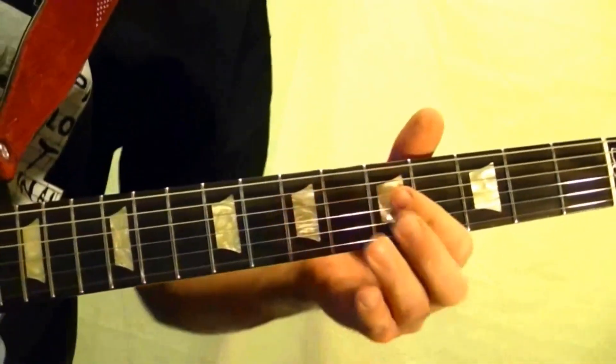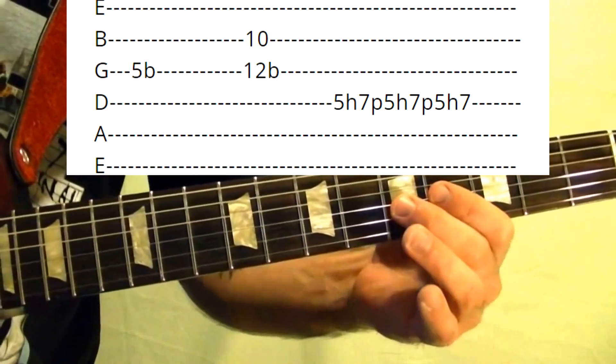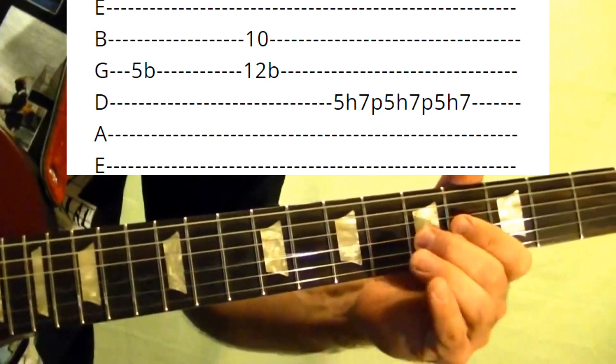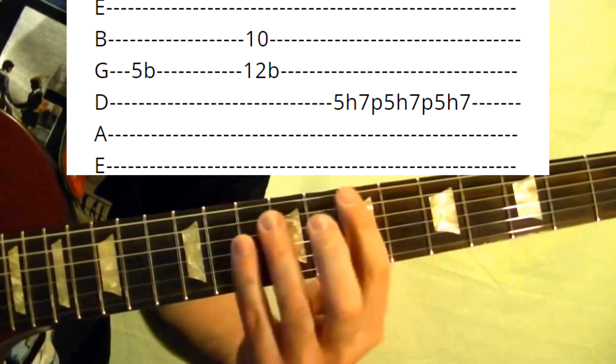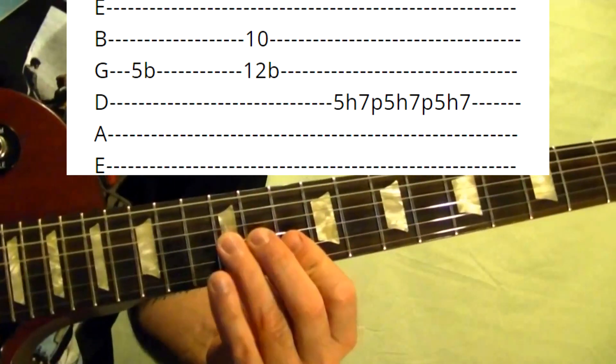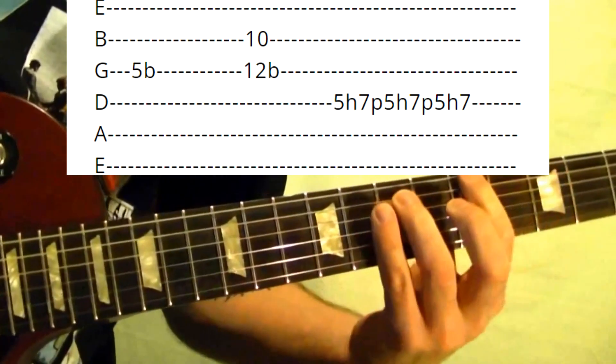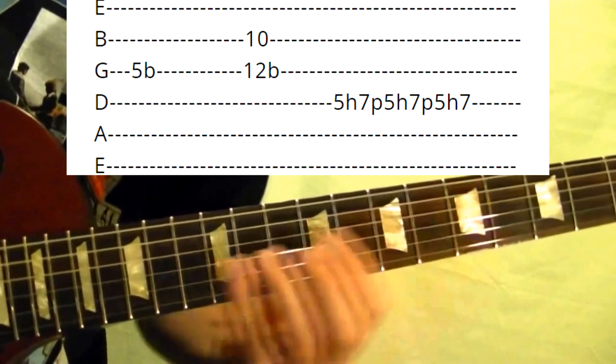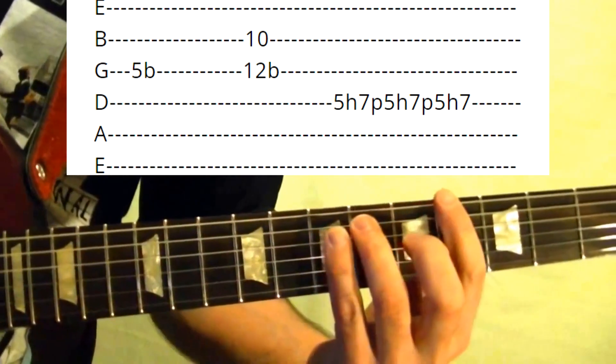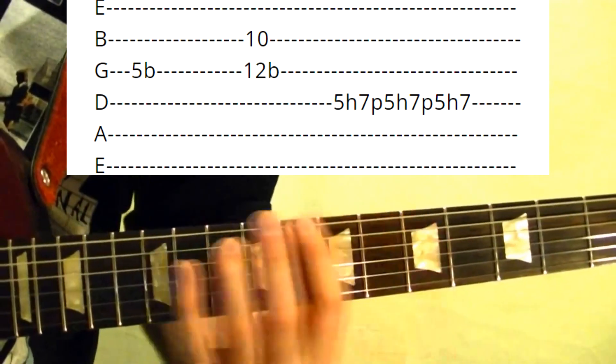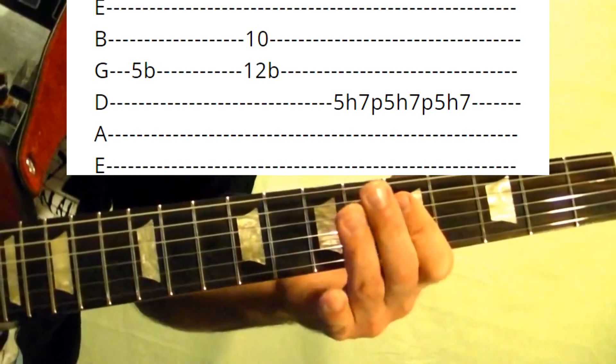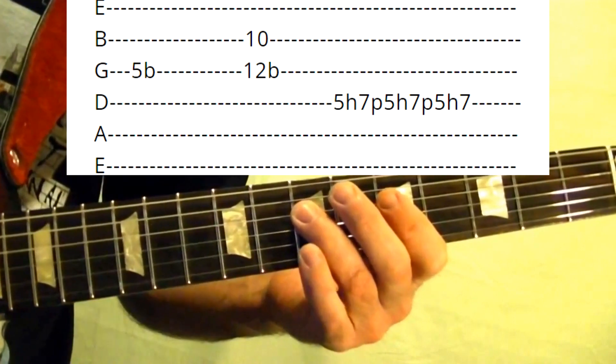So those fills: first one, it's made of the third string fifth fret, just bend up, give a shake. Next one, let's play that: the second string 10th fret, third string 12th fret, bend up on the third string. Third one, let's play it on the fourth string, fifth fret, hammer on to the seventh, hammer on and off.